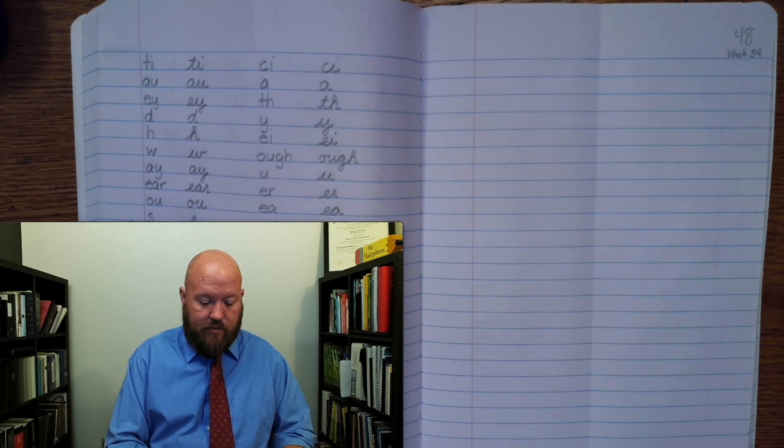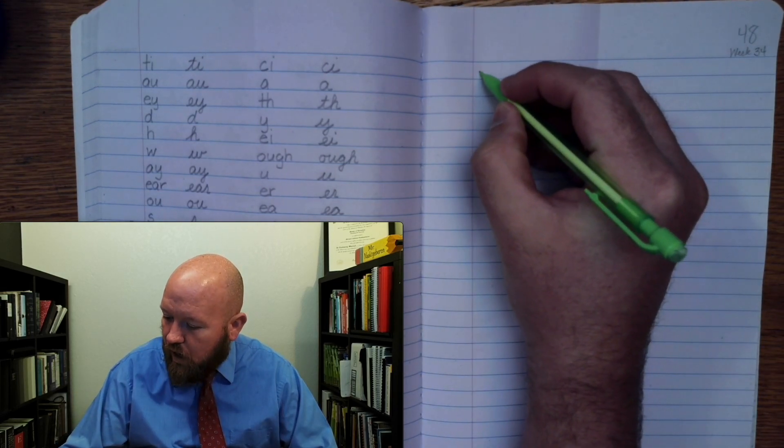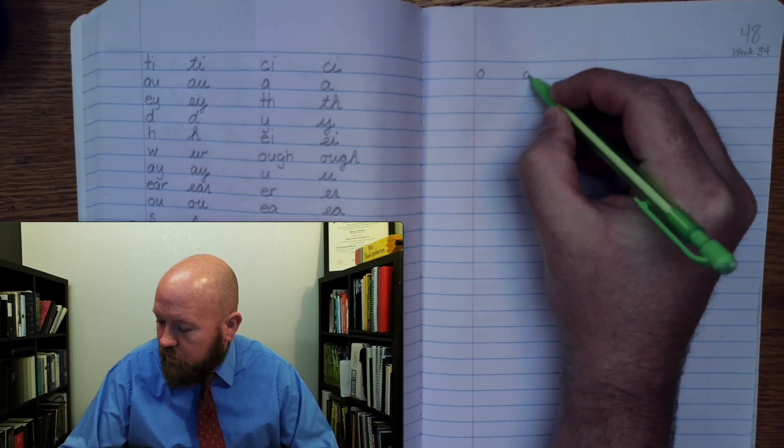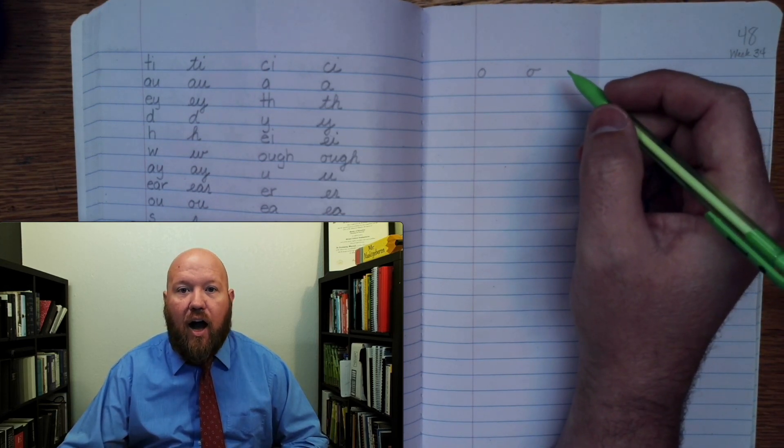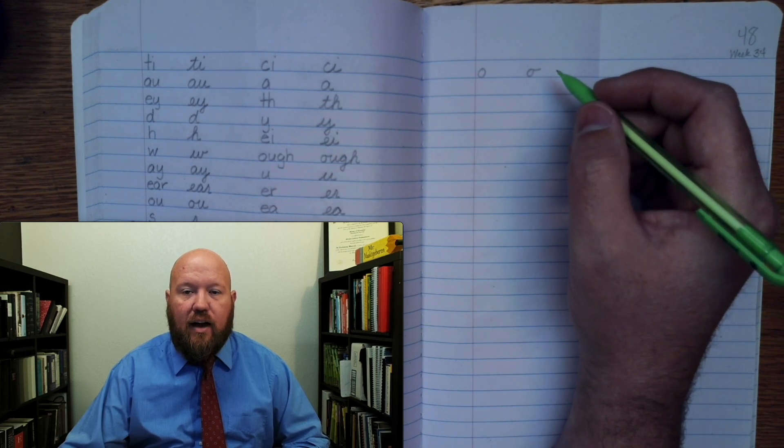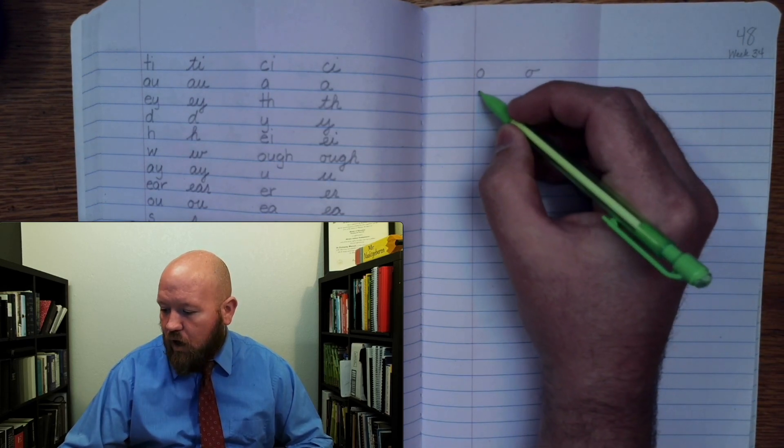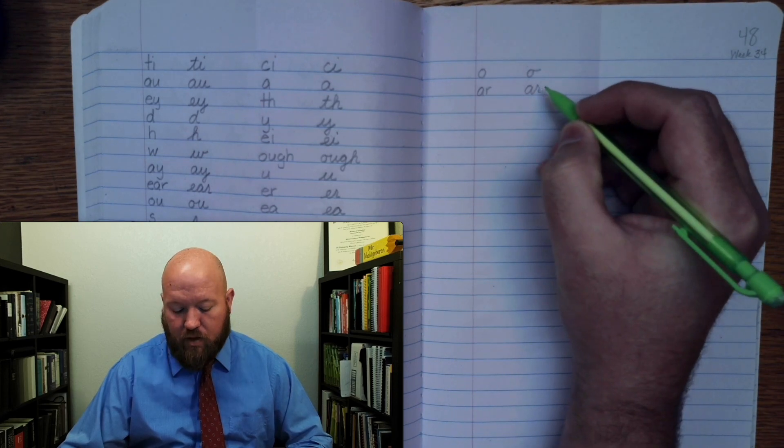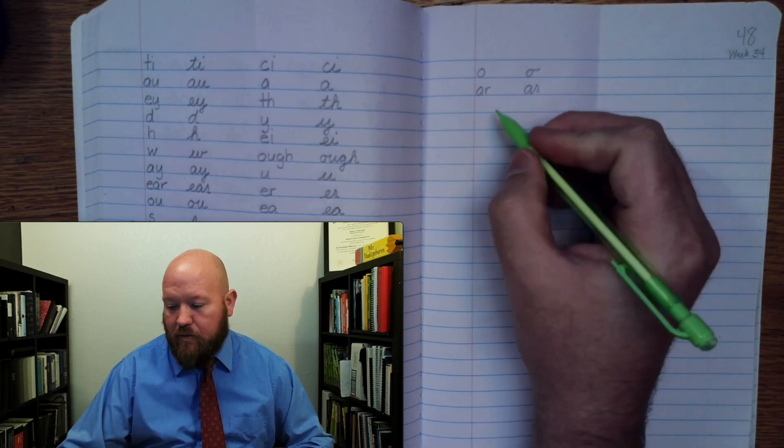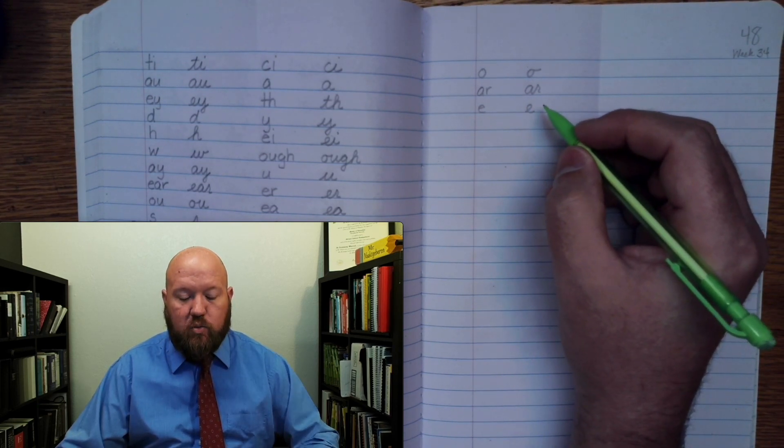All right. First one is. Ah. O. Ah. O. Next one. Oh, I did that one wrong. Ah. O. O. O. Ah. O. O. O. All right. Next one. R. R. Next one. Eh. E. Eh. E.